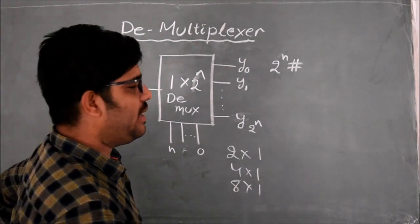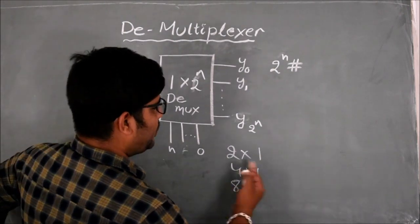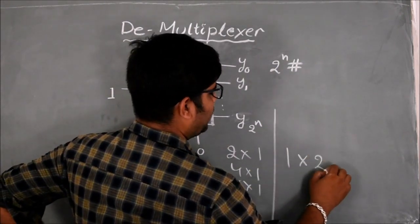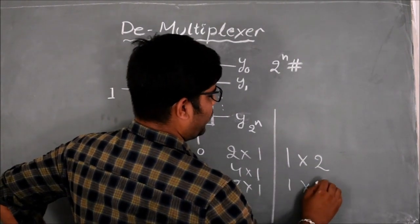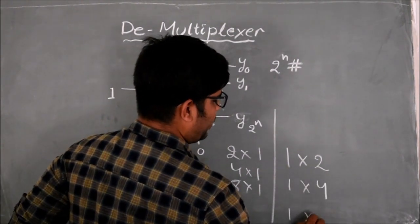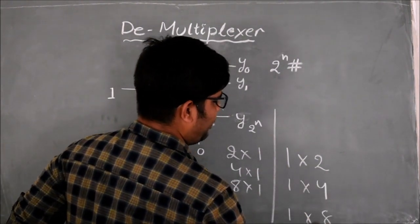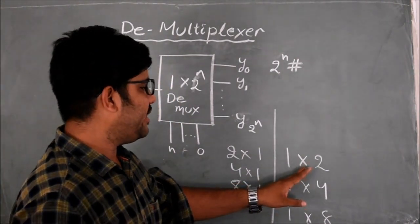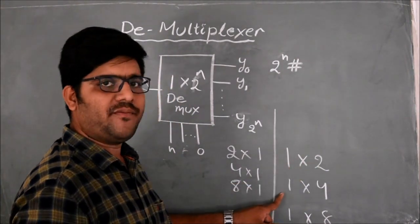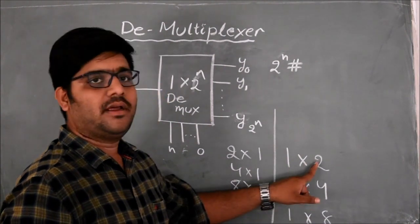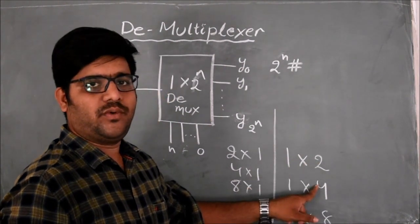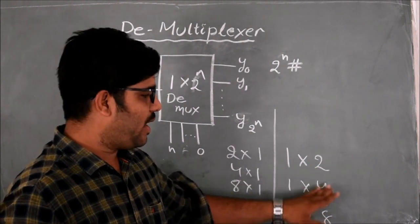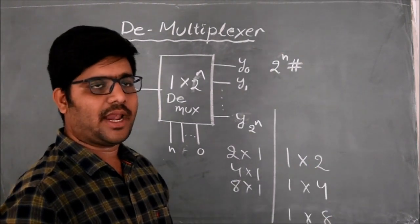As with the multiplexer where we have seen 2x1, 4x1, and 8x1 multiplexers, likewise for the D-multiplexer we have the opposite: 1x2 D-mux, 1x4 D-mux, 1x8 D-mux and so on. This represents only 1 number of input but 2, 4, 8 and so on numbers of outputs. The outputs are actually dependent on the selection line.